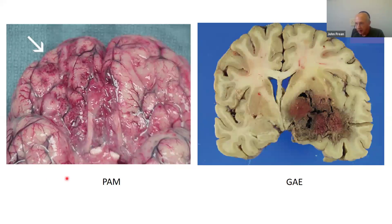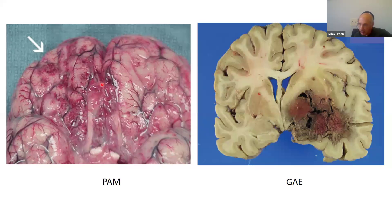Unfortunately, most CNS diagnoses are made post-mortem. The typical post-mortem appearance in PAM is hemorrhagic meningoencephalitis with destruction of the olfactory lobes where infection originated — they are literally turned to mush — then invasion deeper into the brain along blood vessels. For GAE, there are generally granulomatous necrotic areas with brain infarction, and brain stem involvement is often the fundamental cause of death.